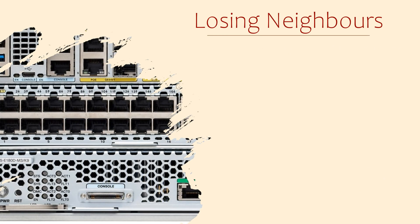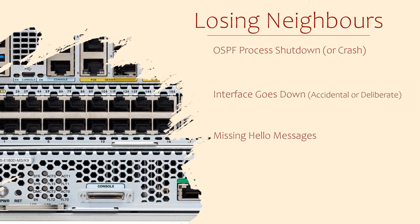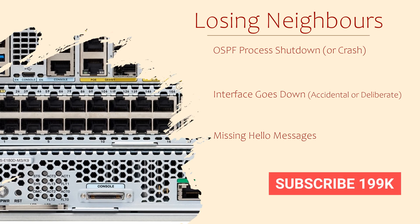Now we'll look at how neighbours fail. When neighbours fail, or a link to them does, this changes how traffic flows through the network. We can broadly consider three possibilities: when the OSPF process is shut down or fails, when the interface the neighbour is on goes down (this could be deliberate or accidental), and when hello messages go missing.